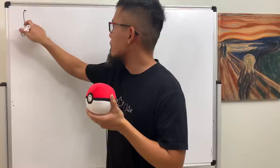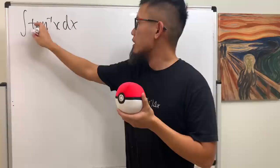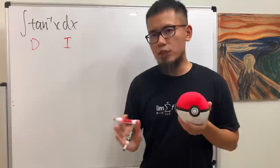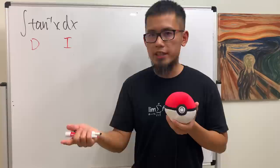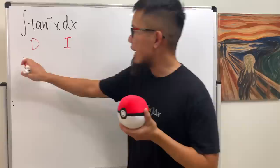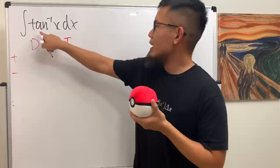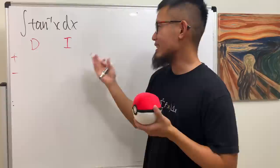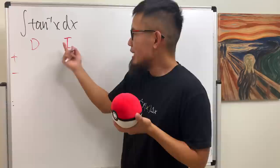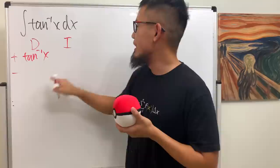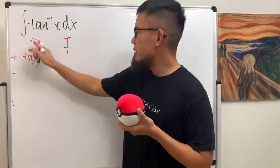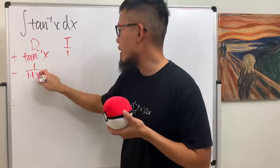Let me show you another example so you can really see that the DI method and the UdV are equivalent. Let's look at the integral of inverse tangent x. For the DI setup, I put down D and I columns, then plus, minus on the side. Under the D column, you pick something to differentiate; under the I column, you pick something to integrate. We really have no choice but to differentiate inverse tangent x, and then integrate 1 — which is just integrating dx.